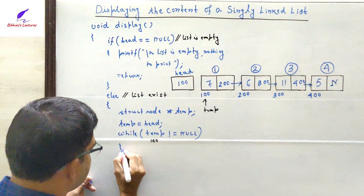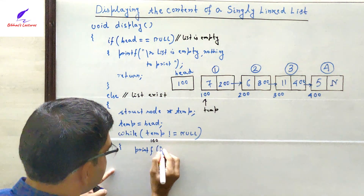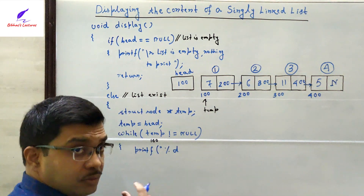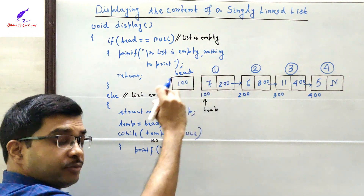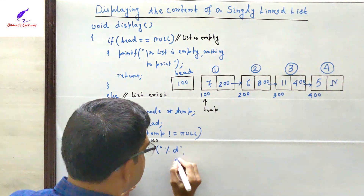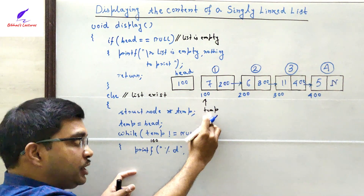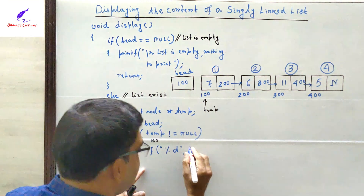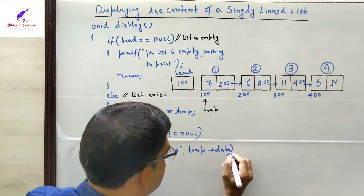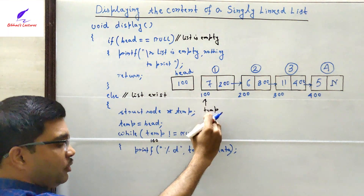If the node is valid, it has a valid data part, so we print it. We write: printf("%d", temp->data). We use %d because the data part stores integer values, and temp->data accesses the data part of the node currently pointed to by temp.